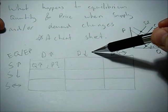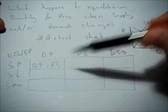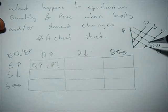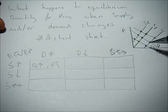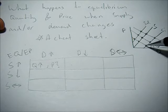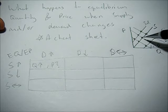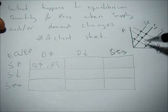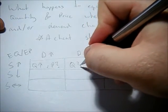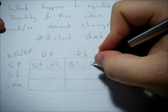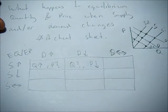Now what happens if demand decreases and supply increases? Here's supply increasing and here's demand decreasing. We know that price is going to be lower, but we're not too sure about quantity. So quantity is unknown and P goes down.